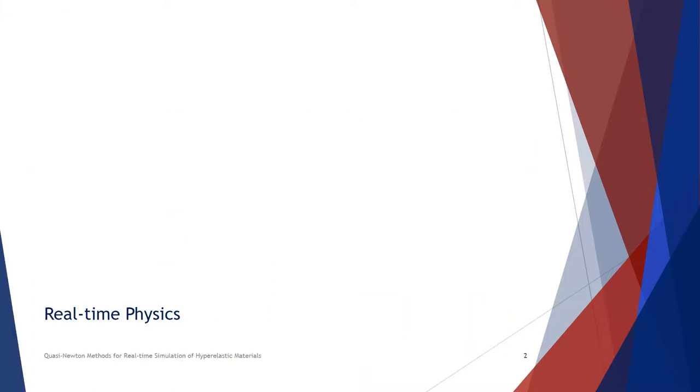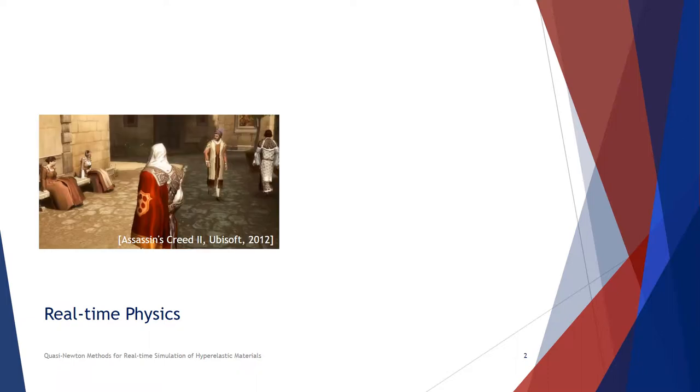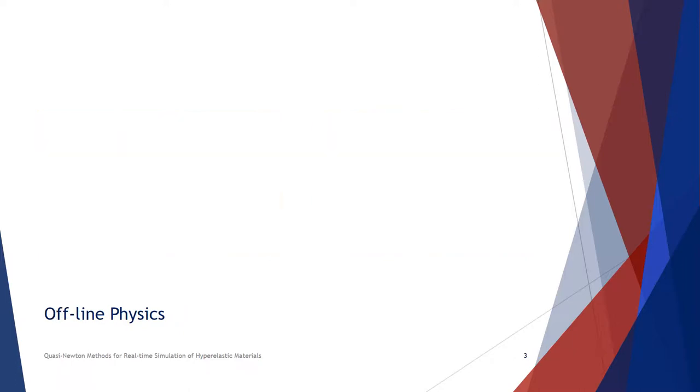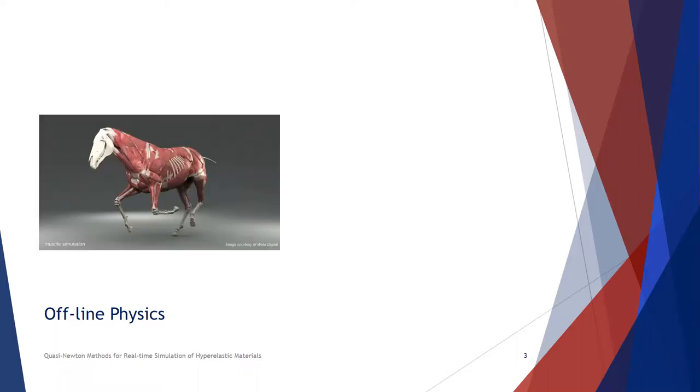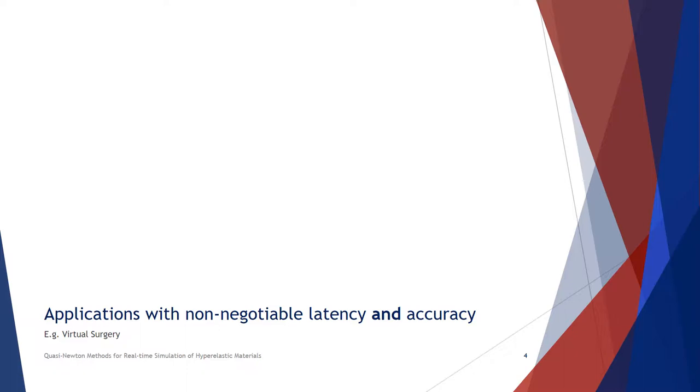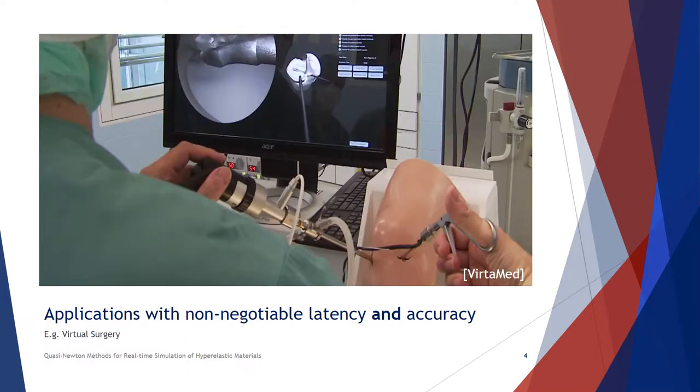In real-time graphics applications, speed is not negotiable. For example, if you want to simulate a nice cape of a game character or interact with a virtual object in a VR environment, the simulation cannot be paused and the feedback needs to be instant. In offline applications, on the other hand, usually accuracy is a more important concern. There are also applications, for example virtual surgery, that have both requirements on latency and accuracy.